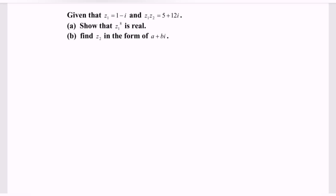Given that z sub 1 is equal to 1 minus i, and the multiplication of z sub 1 and z sub 2 is equal to 5 plus 12i. Part A: show that z sub 1 to the power of 8 is a real number. Part B: find z sub 2 in the form of a plus bi.